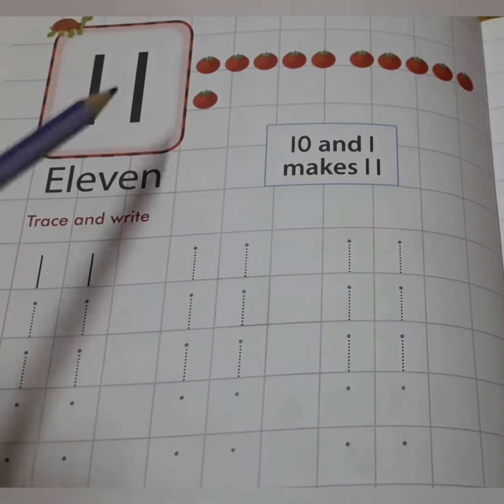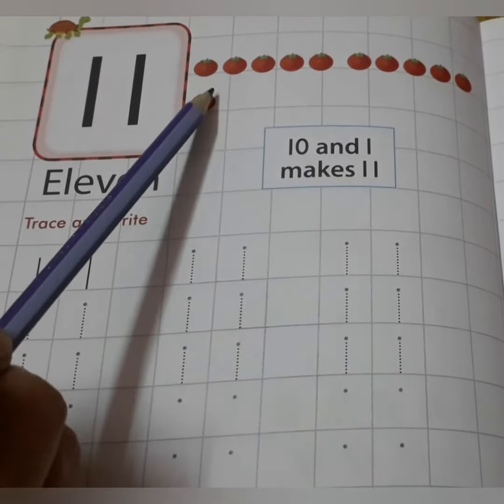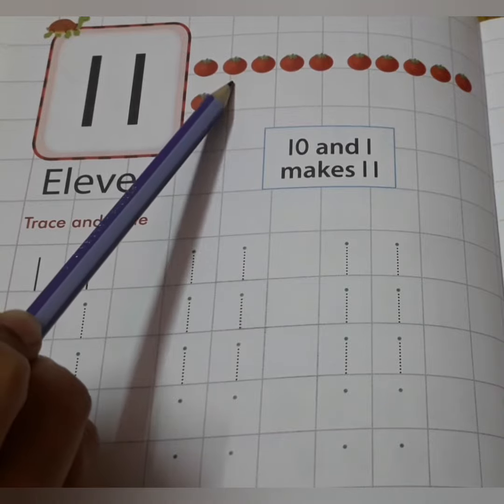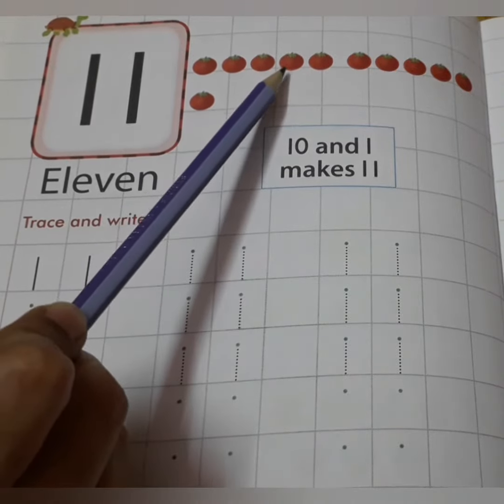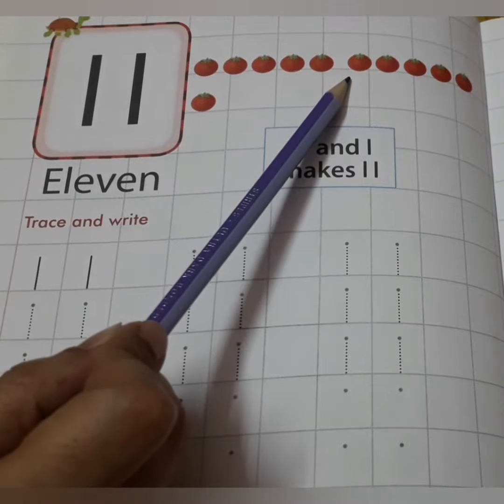Kids, first of all, count these tomatoes. 1, 2, 3, 4, 5,